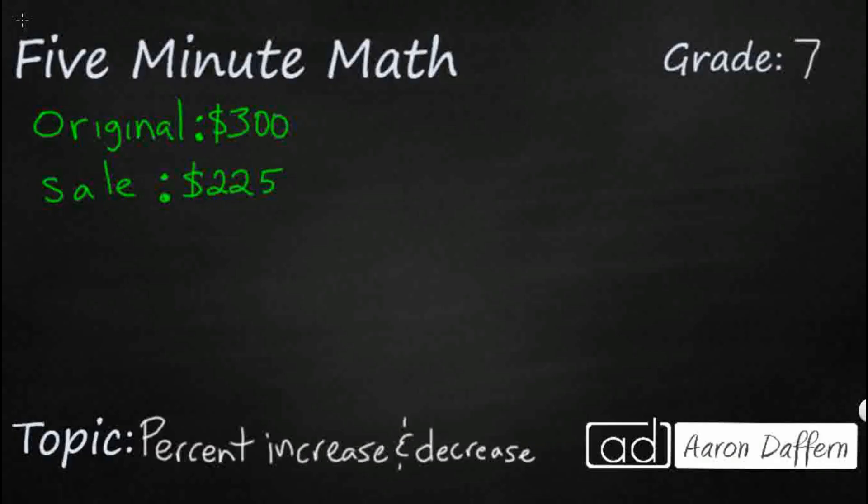So let's say we have a simple problem of something, let's say it's a TV. The original price is $300, the sale price is $225. You want to know how much percent off did they take? What was the percent decrease?